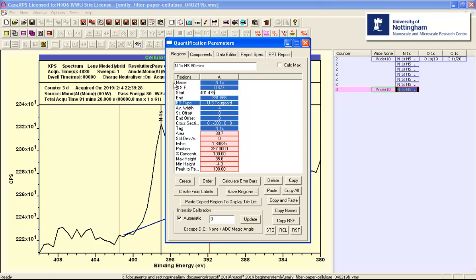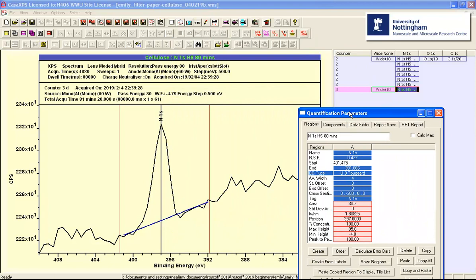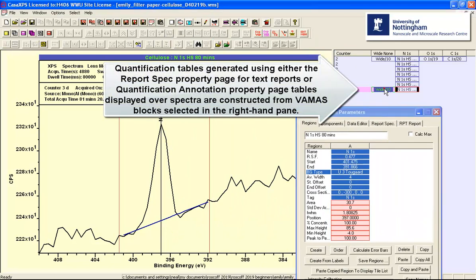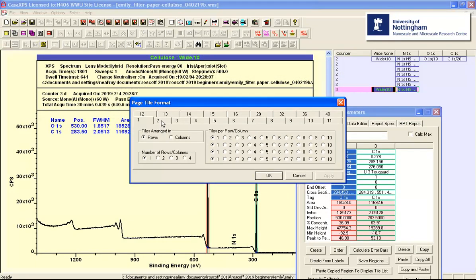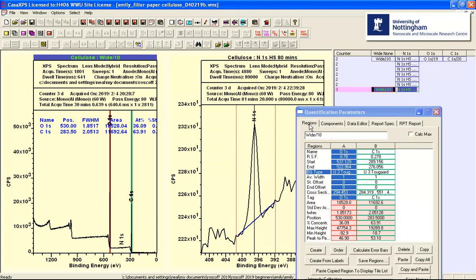So I have nitrogen here. I need to make sure that I use the same relative sensitivity factor. So we've got the survey. So we'll display both of these in tiles. So we've got the survey with the oxygen and the carbon. And then we've got a narrow scan that was measured for longer.